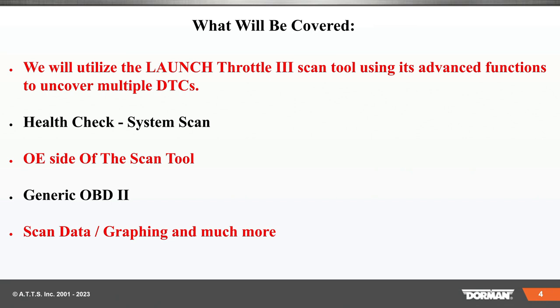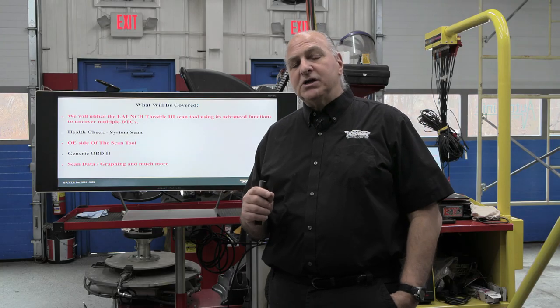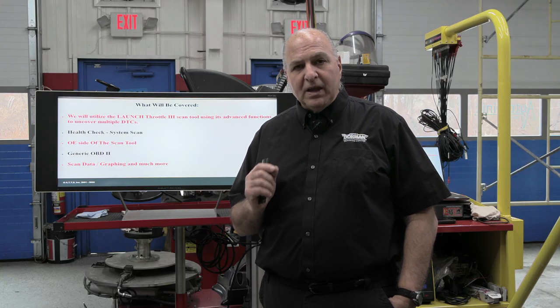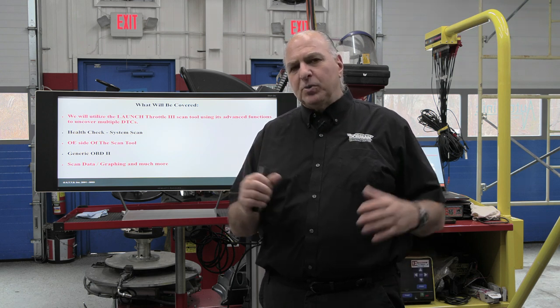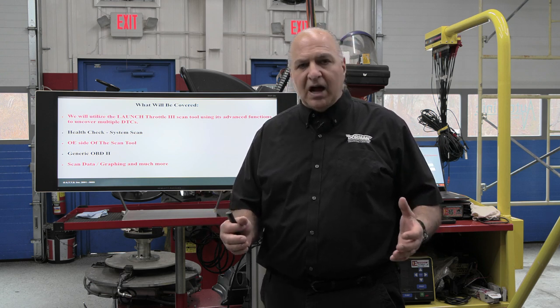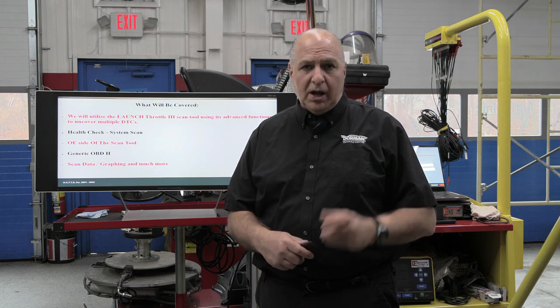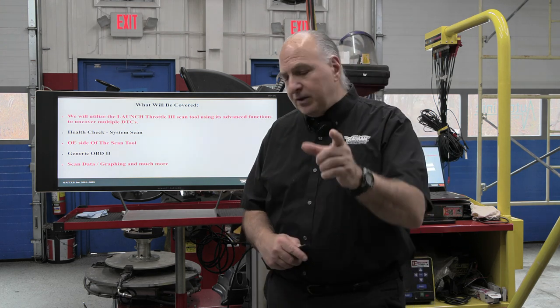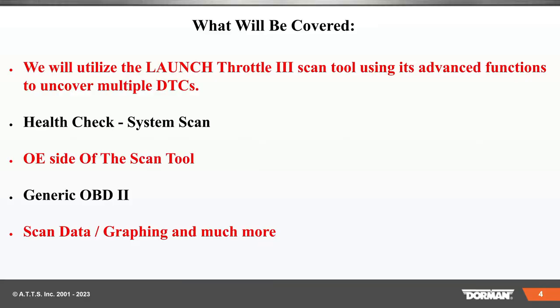What will be covered? We're going to utilize the Launch Throttle 3 Scan Tool using its advanced features to uncover multiple DTCs. We're going to do a health check, a system scan on the OE side of the scan tool. We're also going to look at the generic OBD-II side. Now, Oscar Gomez is an instructor out in California — he put something on Facebook to ask people, just to see what their answers would be, and they were all over the place.